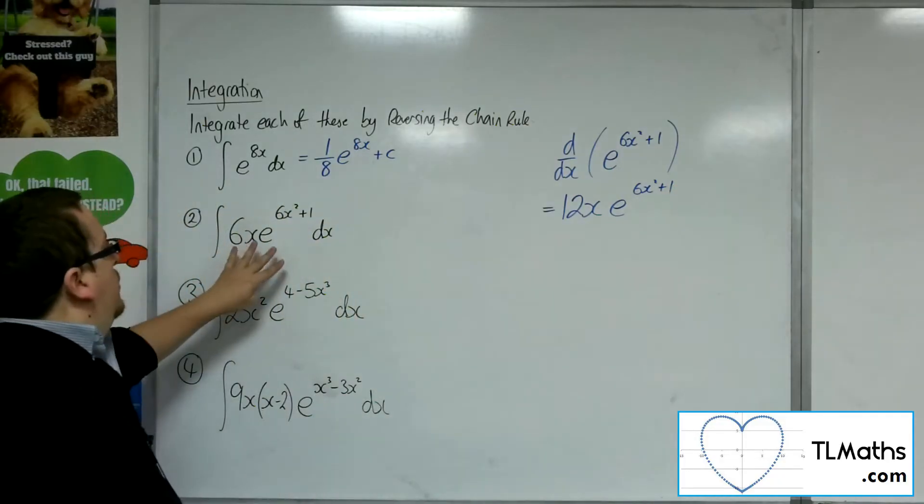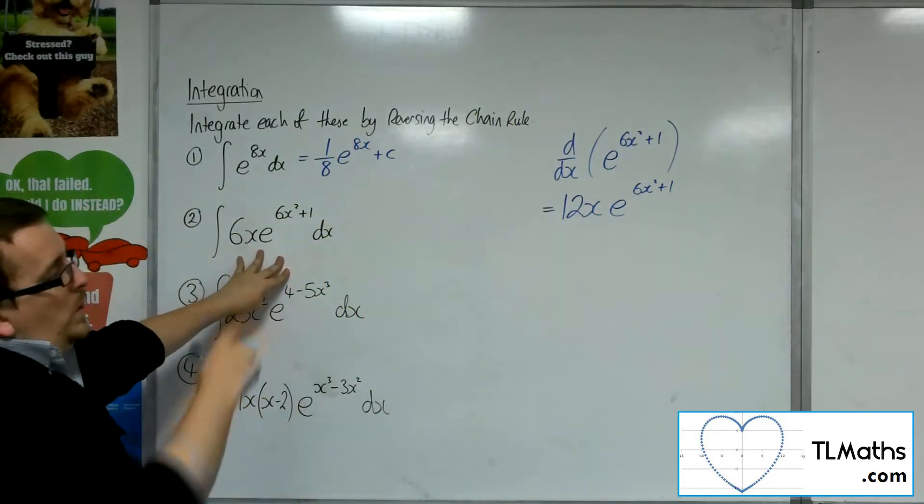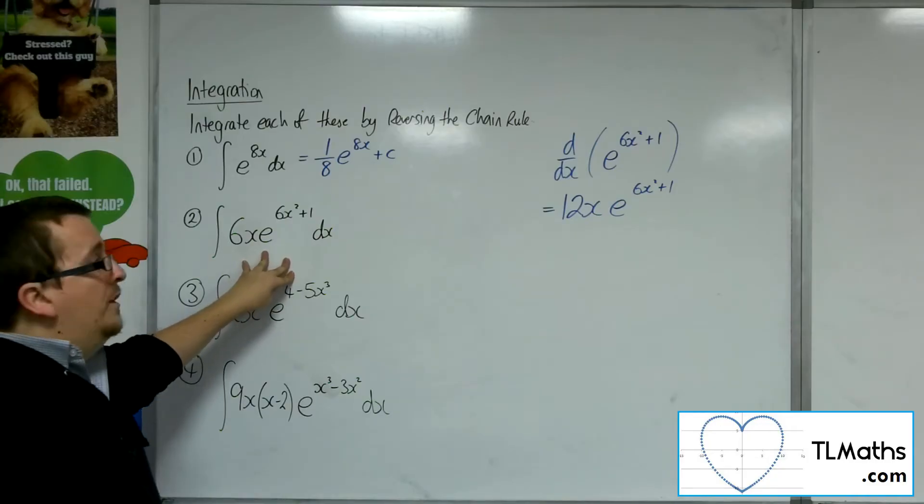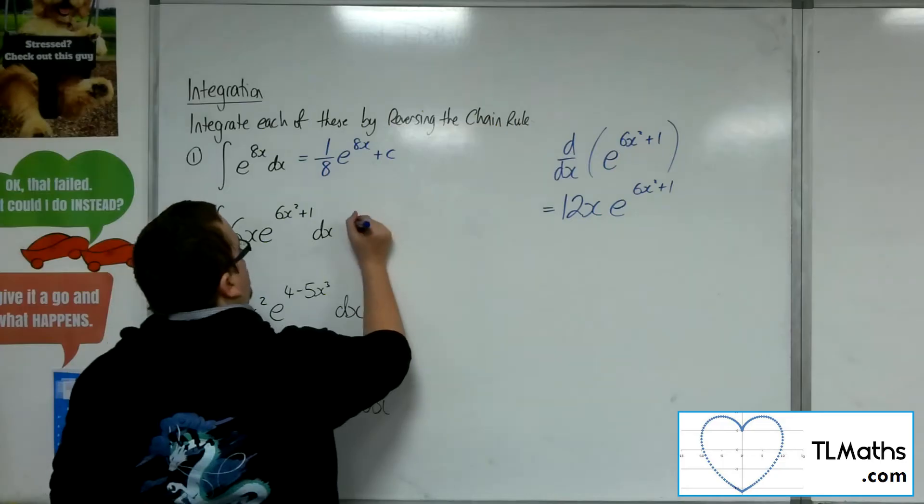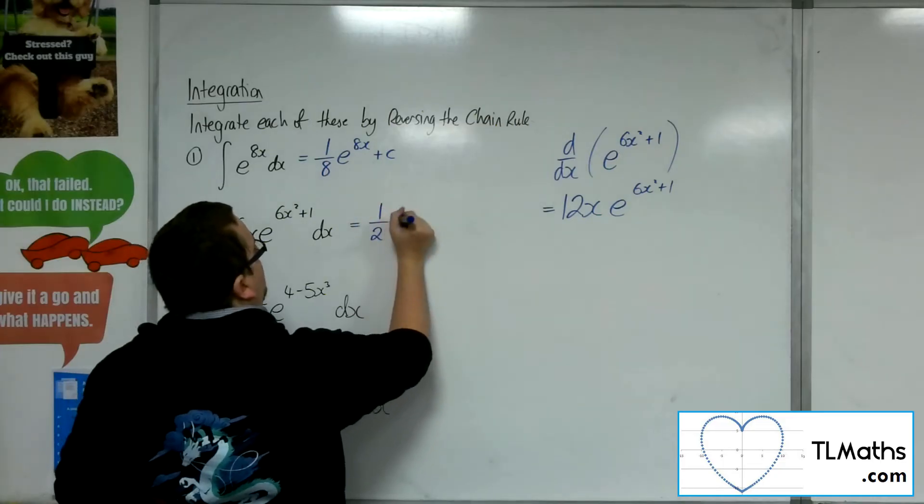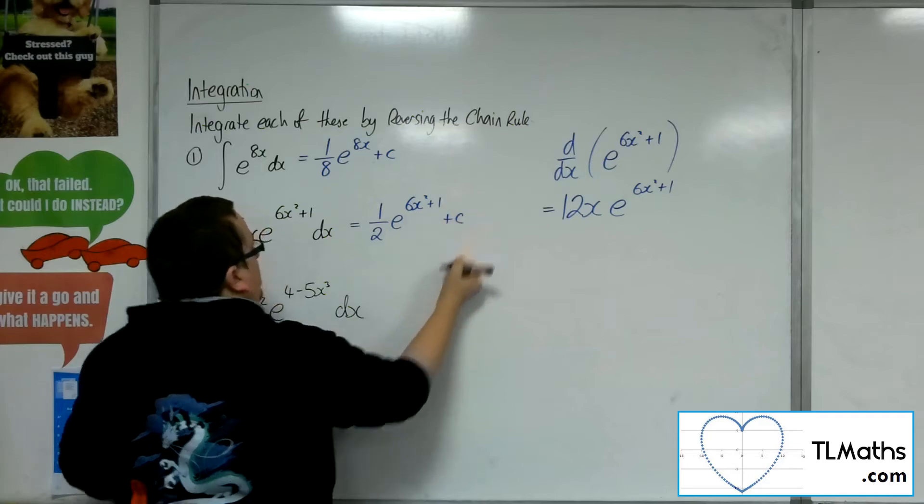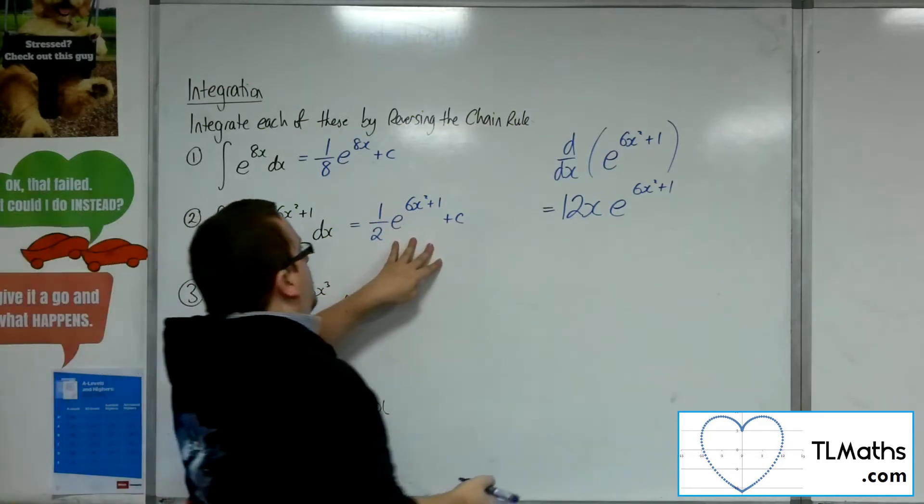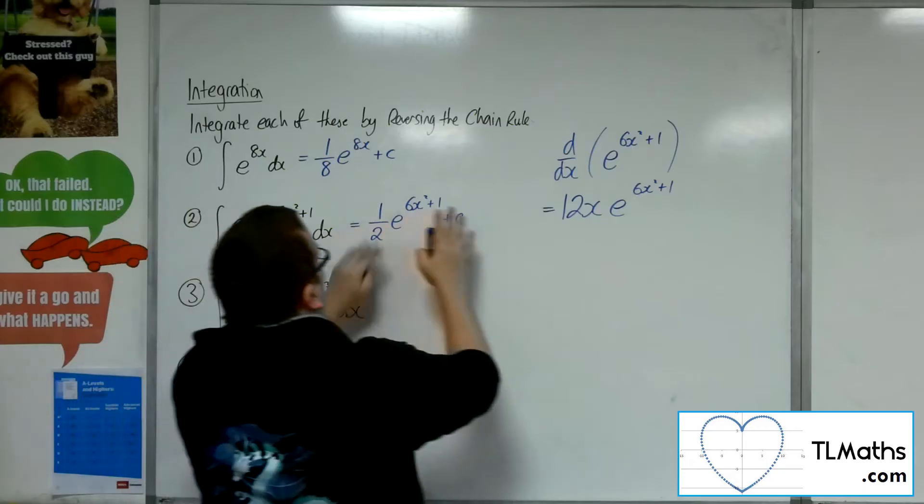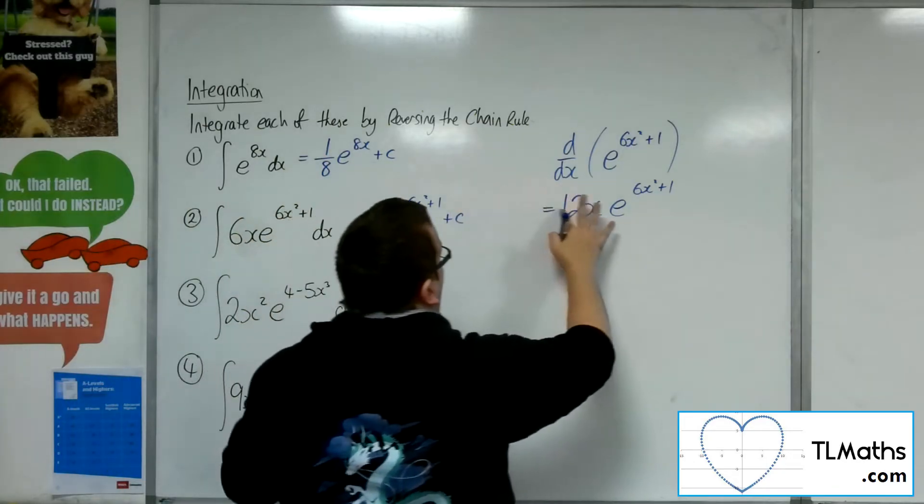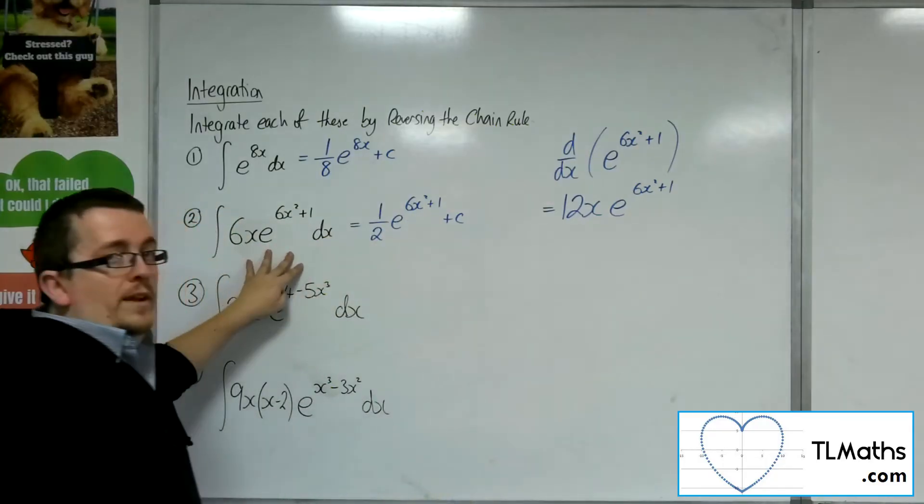So what have I got? Well, I've got 6 in front, and there's a 12 there, so I've actually got 1 half of what I need. So this will be 1 half e to the 6x squared plus 1 plus constant of integration c, because that should differentiate to that. We know that the e to the 6x squared plus 1 differentiates to that, so 1 half of that is what I need.